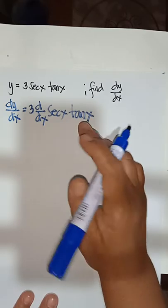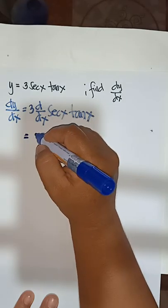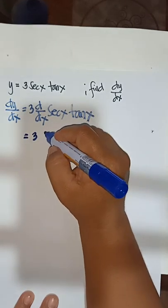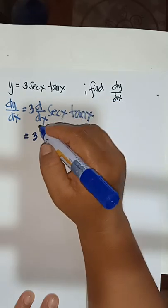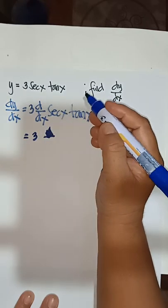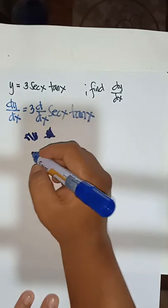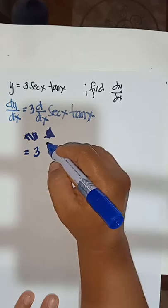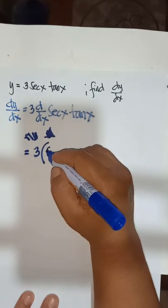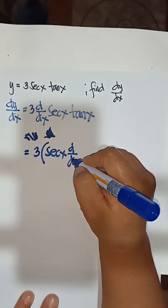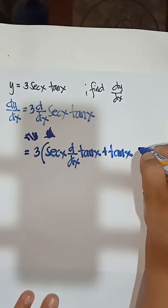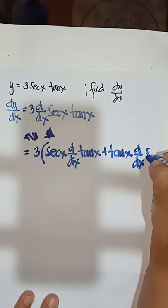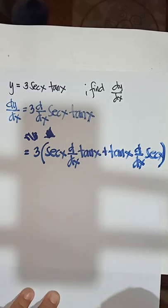So we will have 3 d/dx. You start with secant x, d/dx of tangent x, plus tangent x, d/dx of secant x.